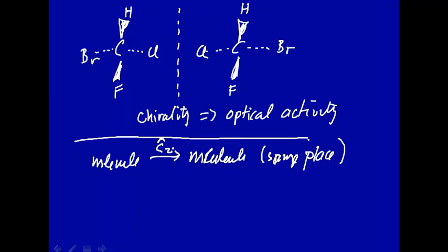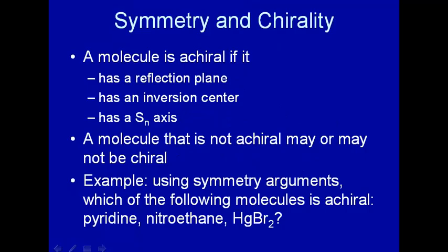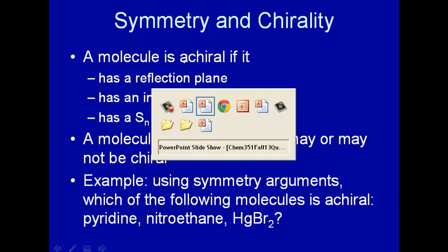Now we want to show that — suppose a molecule were chiral — would it have a reflection plane? We'll show that no, it won't, and therefore the molecule can't be chiral.